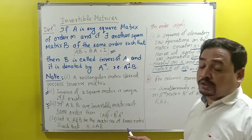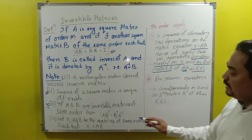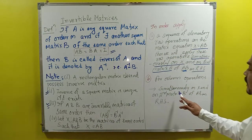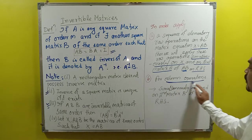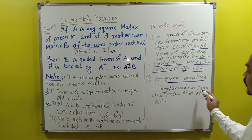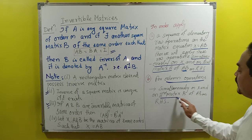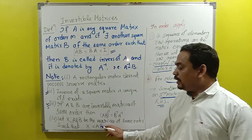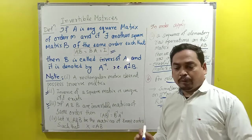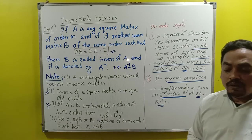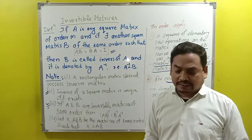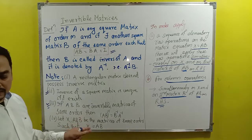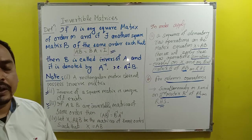If column operations are applied, then they are applied simultaneously on X and on the second matrix B of A·B on the RHS. For column operations, the operation applies to X and to the second matrix B — not the first. Note down these properties, then we will discuss how to find the inverse of a square matrix.